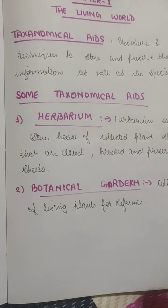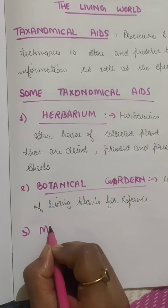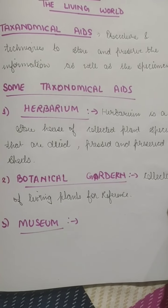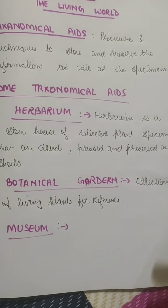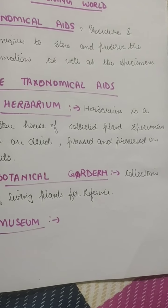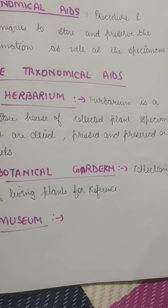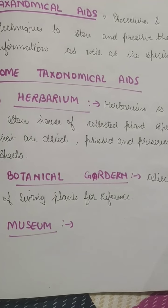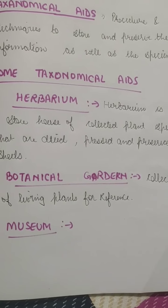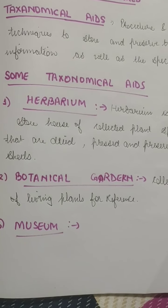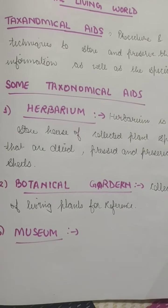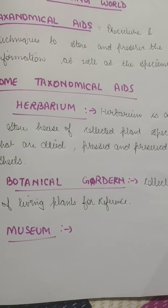After botanical gardens, we also have museums. In the museum, there is a collection of preserved plants and animals. Biological museums are generally set up for educational institutes. They have collections of preserved plant and animal specimens for study and reference. Museums are not for living organisms — the specimens are preserved, meaning they are no more alive.